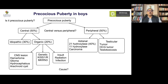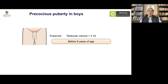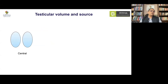Precocious puberty in boys is defined as the onset of pubic hair development, penile enlargement, or testicular volume increase beyond the pubertal level of 4 mL before 9 years of age. The most important thing to assess in a boy presenting with precocious puberty is the testicular volume.